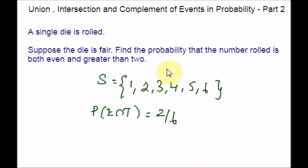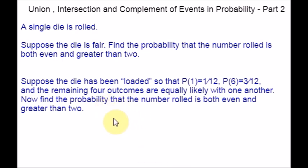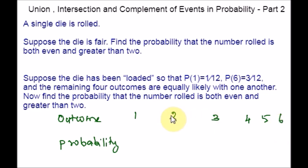Here is another part of the same example. Suppose the die has been loaded: probability of getting 1 is 1/12, and probability of getting 6 is 3/12. The remaining four outcomes are equally likely with one another. Find the probability that the number rolled is both even and greater than 2. First, let us take down the information from the question. Let me list all the possible outcomes and their corresponding probabilities. For outcomes 1 and 6 it is given as 1/12 and 3/12. For the rest, we don't know, so I am just going to mention it as P.